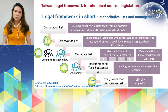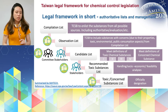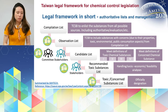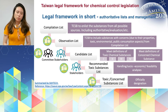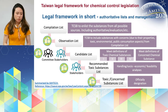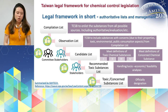We use this slide to simplify the very complicated process. The first step is about the compilation of the list. The EPA's Bureau of Toxic Chemical Substance — TCSB — will enlist substances from all possible sources, including authoritative or evaluation lists from around the world, and compile them into an observation list. In this step, TCSB includes substances with concerns due to their priority, toxicity, or environmental or public consumption aspects.